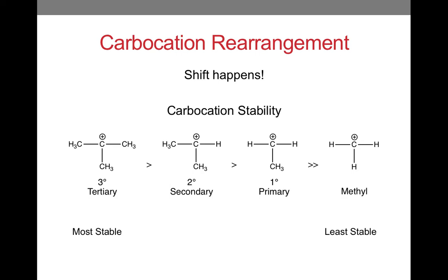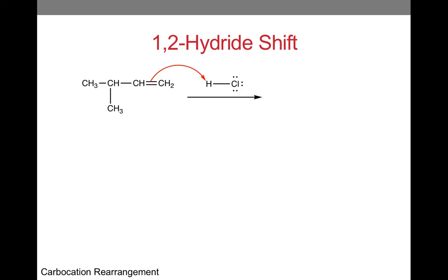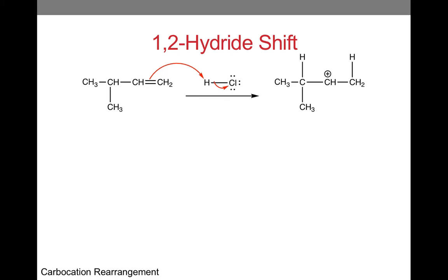Carbocations can rearrange if a more stable carbocation can be formed. Recall that a tertiary carbocation is the most stable, while a methyl carbocation is the least stable. One way this can happen is through a 1,2-hydride shift, which is the movement of a hydrogen atom. When we look at this reaction, we can see that the expected Markovnikov product is the minor product, and another product is the major product. We turn to the mechanism to answer this question. First, the pi bond is going to break, causing the HCl bond to break. The electrophile will add, and we will get a carbocation intermediate. Since it is connected to two other carbons, this is a secondary carbocation.